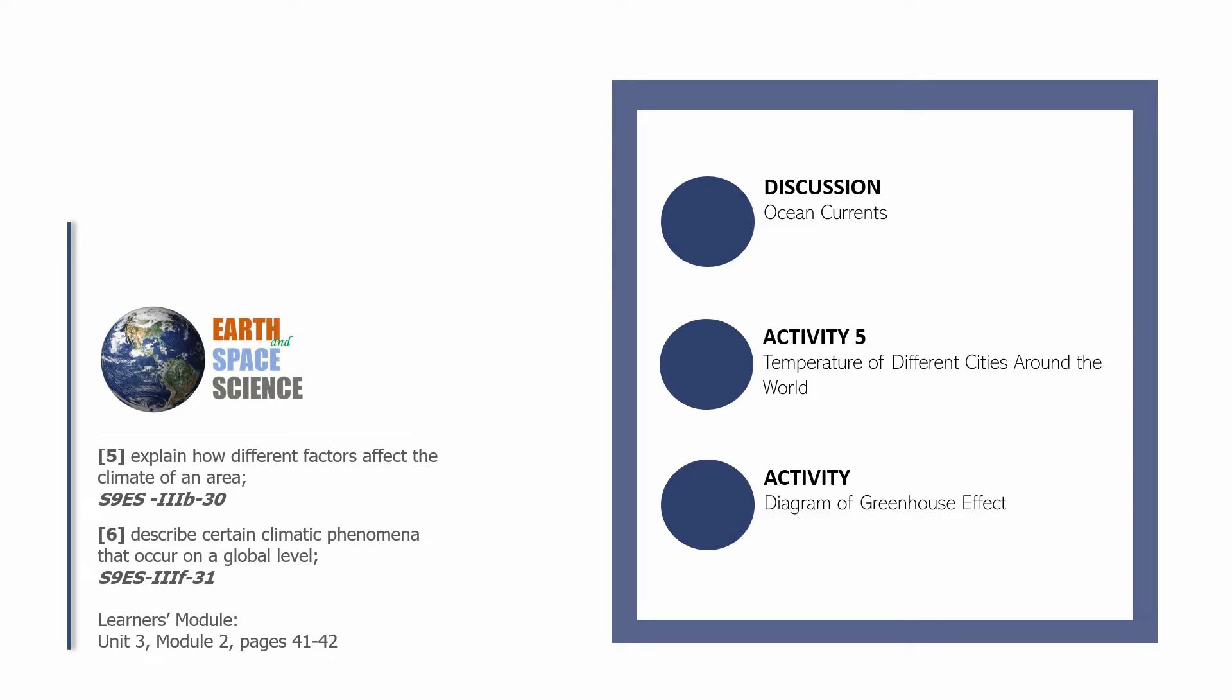This is Earth and Space Science Eight, the eighth session in the Earth and Space Science series of the Knowledge Catalog. We are about to finish our fifth learning competency: explain how different factors affect the climate of an area, and we're about to start a new learning competency which is describing certain climatic phenomena that occur on a global level. If you want to follow through with the learner's module, you can open it in Unit 3, Module 2, pages 41 to 42.